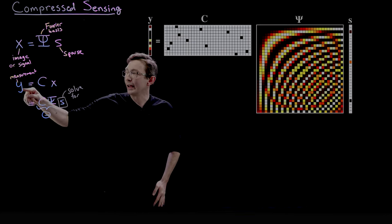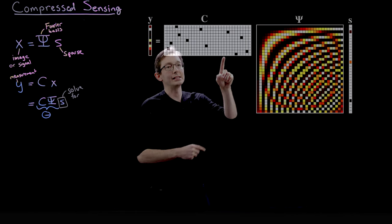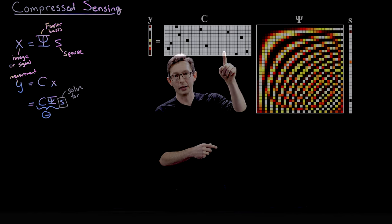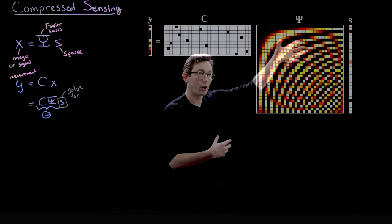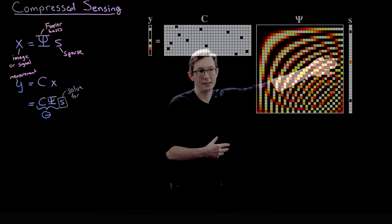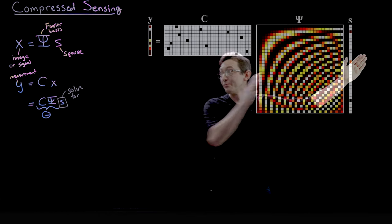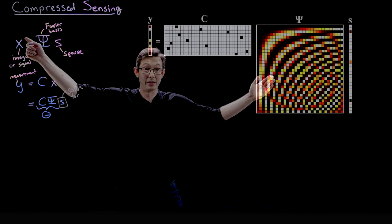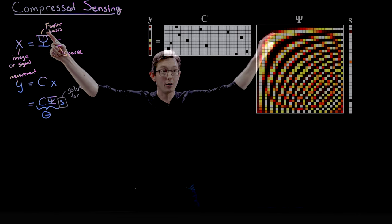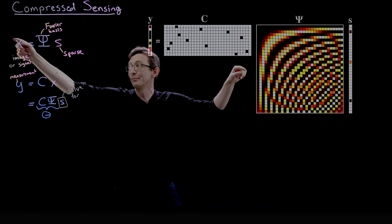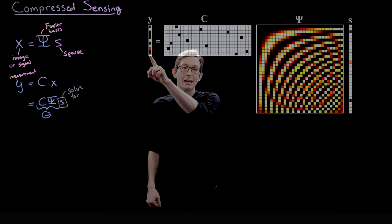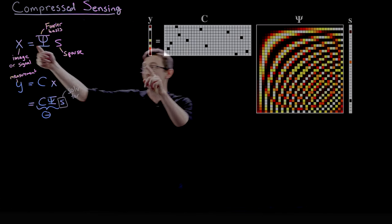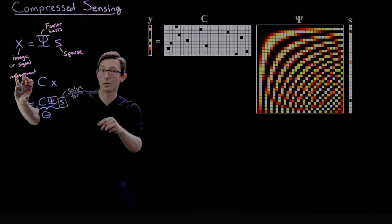And y is my measurement. So this C matrix here, what C is doing, this is my measurement matrix. It is basically pulling rows of psi times s. Psi times s is x, my original image. So C pulling rows of this basically means it's sampling pixels from x. So y is just a subsample of random pixels from x.